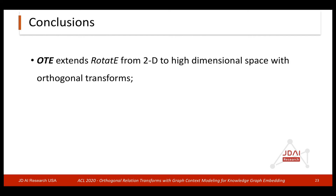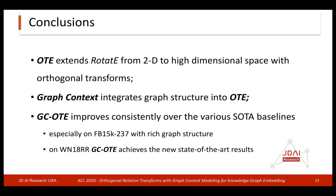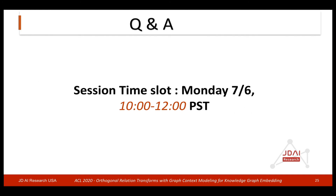To summarize, we propose orthogonal transform embedding, which extends RotateE from 2D to high-dimensional space with orthogonal transforms. We add graph context to OTE, and our model improves consistently over various state-of-the-art baselines, especially on Freebase with rich graph structure. On the WordNet dataset, our model achieves new state-of-the-art results. Our Q&A session will be on Monday from 10 to 12 noon Pacific time — you are welcome to drop by for discussions. Thank you for your attention.